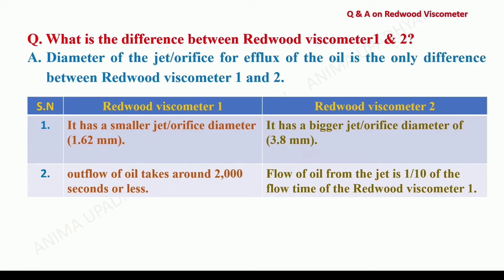What is the difference between Redwood Viscometer number 1 and 2? It is the diameter of the jet or orifice for the efflux of the oil which is different. The diameter of the orifice is only 1.62 mm in Redwood Viscometer number 1 and 3.8 mm in Redwood Viscometer number 2. As a result, the outflow of oil takes around 2000 seconds or less in number 1, and in number 2 it is just one-tenth of the flow time of Redwood Viscometer number 1.